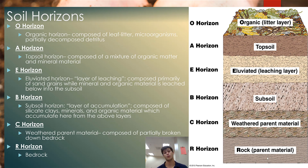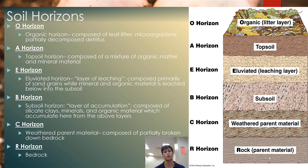Soil horizons are distinct layers of soil that form as a result of different biogeochemical processes. You need to know every single one of these soil horizons for quizzes and exams. Starting at the very top, we have the O-horizon — the organic horizon. This is a layer composed of leaf litter, microorganisms, and partially decomposed detritus. This is where your humus is and the bulk of your organic matter.